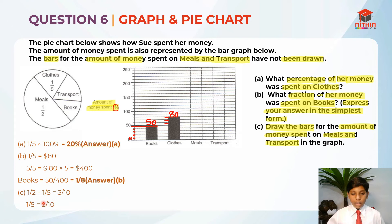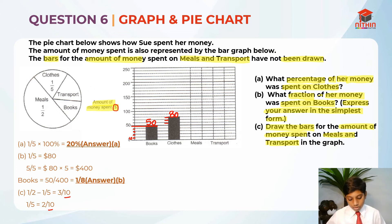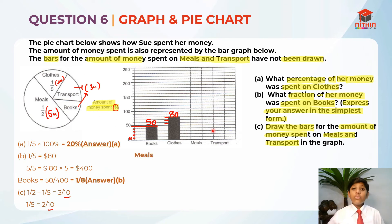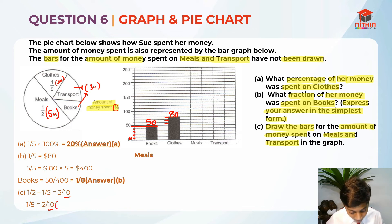Converting to a common denominator: one-fifth is two-tenths. So half is five-tenths, which represents five units. Meals is five units, clothes is two units, and books plus transport together are three units. We know that two units represents the clothes value. We don't know one unit directly, but we do know two units — two units is one-fifth — and this represents the clothes.